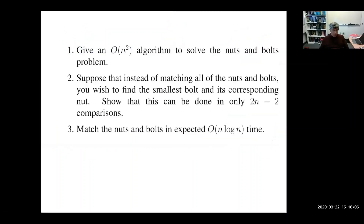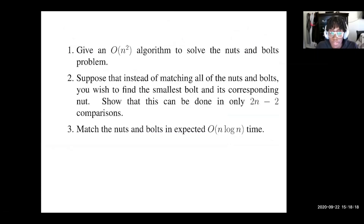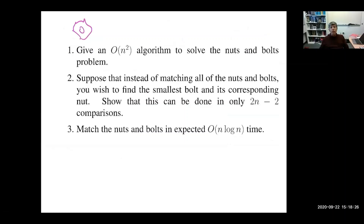First, give me an n² algorithm to solve the nuts and bolts problem. One way is to take a nut and compare it with every bolt until you get a match. Take the first nut, try it against every bolt. The moment they perfectly fit, screw them together and put it aside. After at most n comparisons you'll have matched your nut with the right bolt. Repeat with n minus 1, then n minus 2. After n steps, each requiring at most n comparisons, you'll have paired all nuts and bolts — that's why this takes n² time.